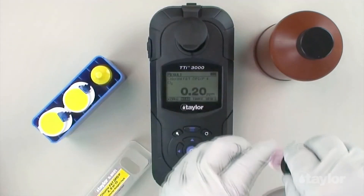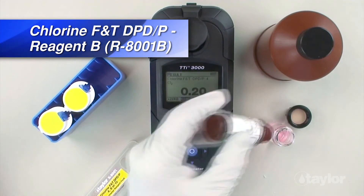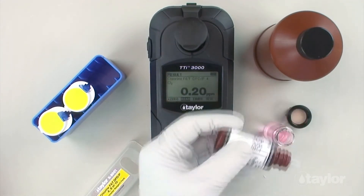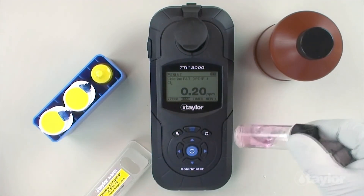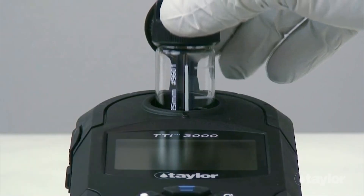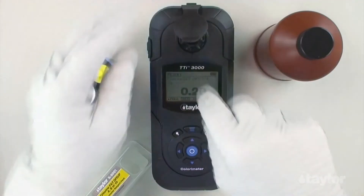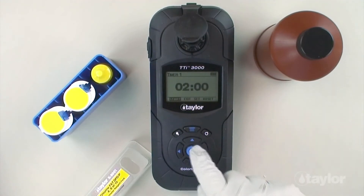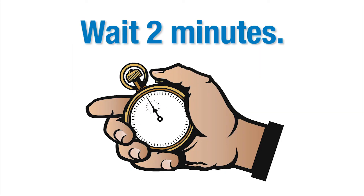To determine the concentration of total chlorine, remove the sample cell from the sample cell compartment and remove the cap. Add five drops of chlorine-free and total DPD-P reagent B, then cap and swirl to mix thoroughly. Insert the sample cell into the sample cell compartment. Since we are testing wastewater in this demonstration, a two-minute wait time is recommended to allow for full color development. To begin the process, select timer using the scroll arrows and then press enter. Select start, then press enter. The two-minute countdown will begin. Immediately select auto and then press enter.